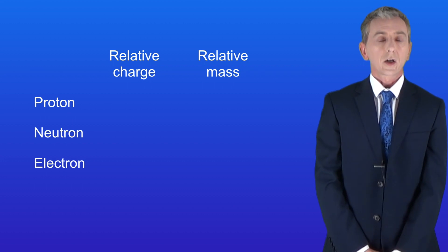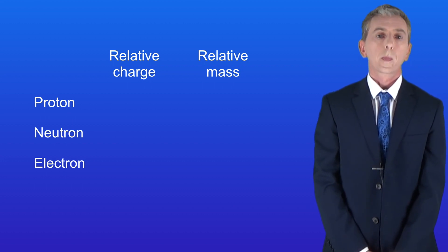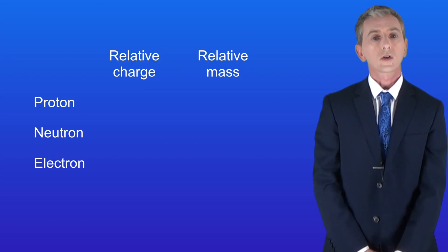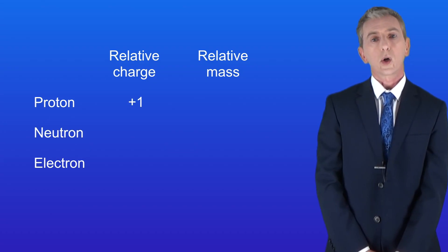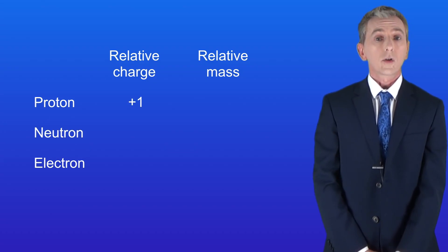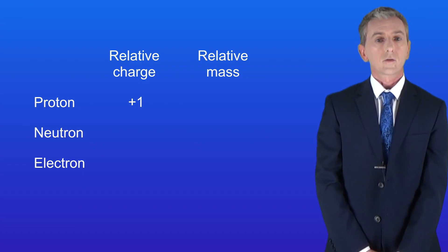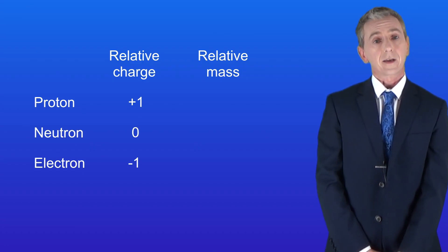The words relative charge means the charge of one particle compared to another particle. Remember that protons have got a relative charge of positive 1. Neutrons are neutral so they've got a relative charge of 0. Electrons have a relative charge of negative 1.